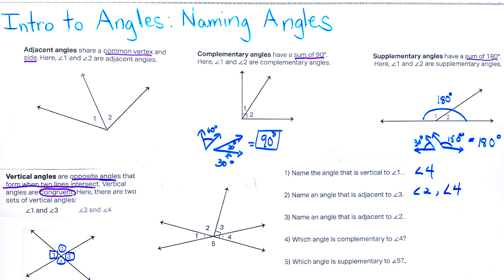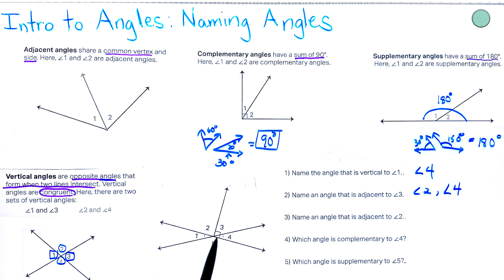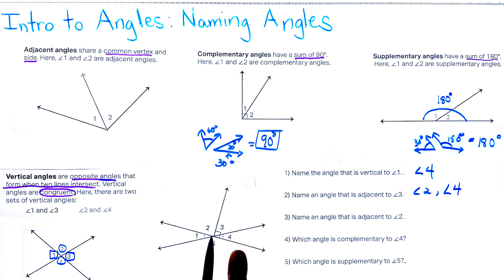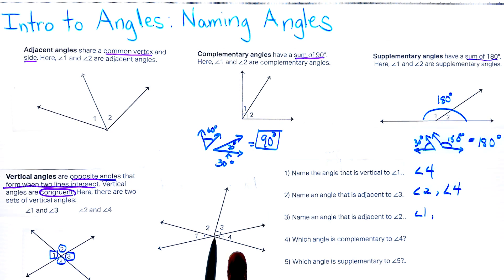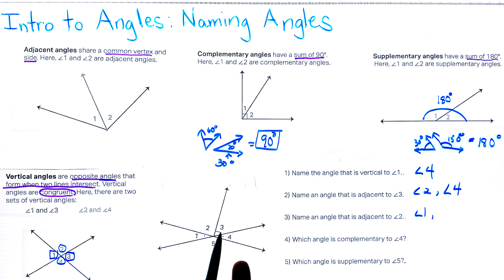Name an angle that is adjacent to angle two. Angle one shares a side and a vertex with angle two, so angle one is a choice. And angle two also shares a side with angle three, so angle three would also be considered adjacent to angle two.